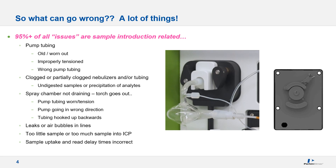So what could go wrong? The answer is a lot of things. One thing to remember is that 95% or more of all issues in ICP-MS are sample introduction related — meaning the peristaltic pump, the nebulizer, and/or the spray chamber. Pump tubing could be old, worn, improperly tensioned, or the wrong type. You could have a clogged nebulizer, the spray chamber might not be draining correctly, or in extreme cases fill up and the torch goes out. Other issues include leaks, air bubbles causing signal spikes, too little or too much sample in the ICP, and incorrect sample uptake, re-delay, and wash times.